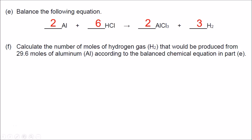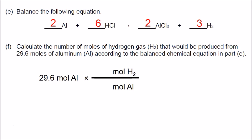Part F: calculate the number of moles of hydrogen gas produced from 29.6 moles of aluminum according to the balanced equation in Part E. We draw the conversion factor with moles of aluminum on the bottom and moles of H2 on the top. The coefficient for H2 is 3 and for aluminum is 2. So 29.6 times 3 divided by 2 gives us 44.4 moles of hydrogen.